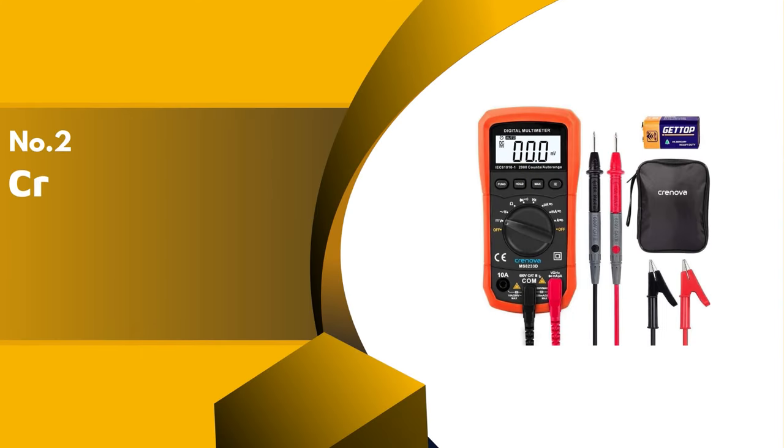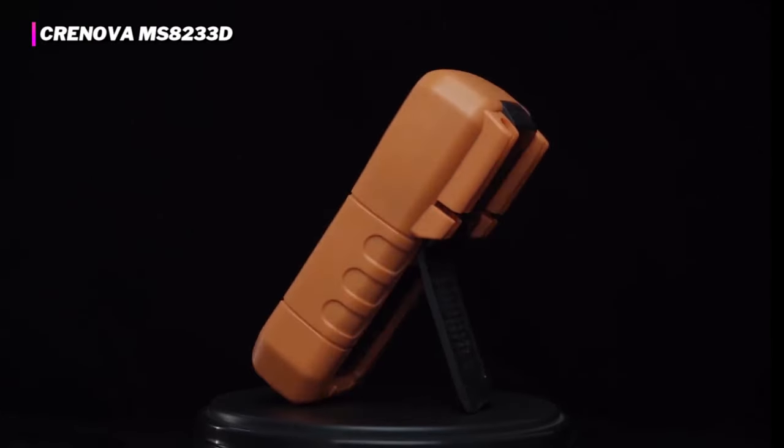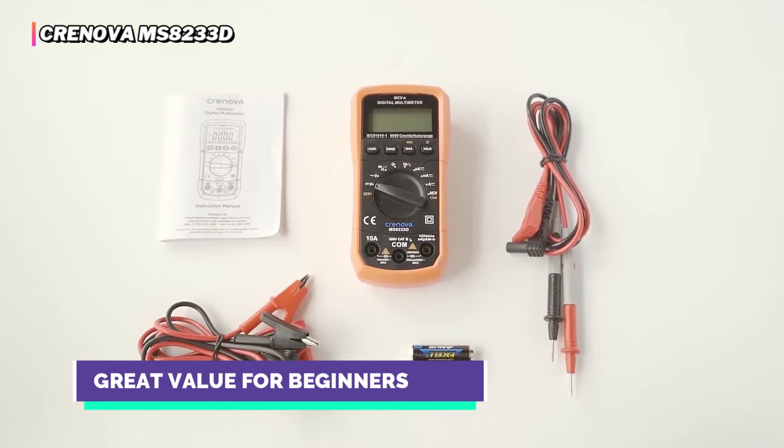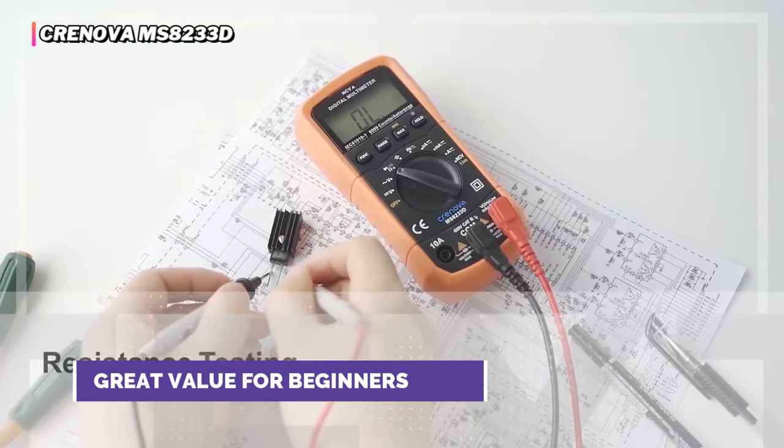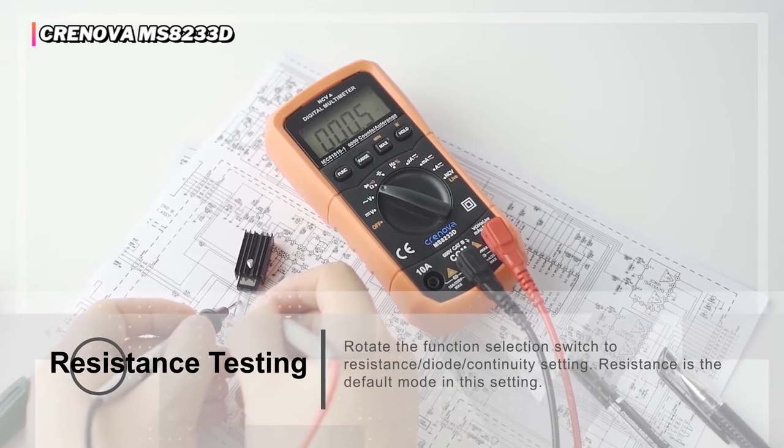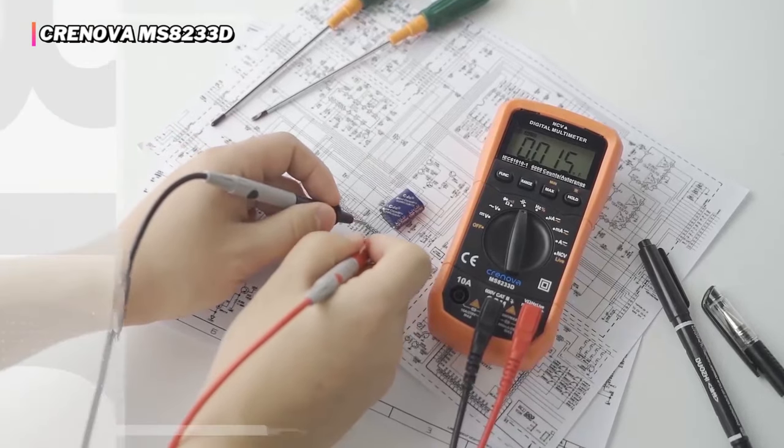The second product on our list is the Cronova MS8233D. We recommend the Cronova MS8233D for beginner DIYers getting started with electrical projects. This capable multimeter is jam-packed with functionality at a price that won't break the bank. It can measure resistance, alternating and direct current, voltage and frequency.